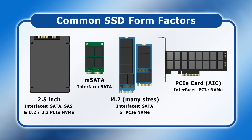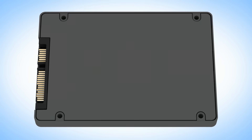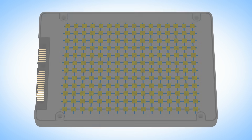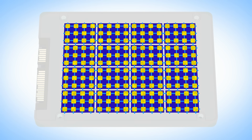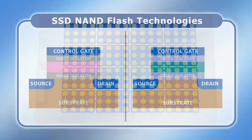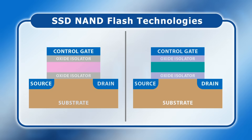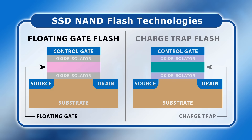SSDs come in a variety of form factors and may feature many different physical connectors and electrical interfaces. However, all SSDs store data on flash memory chips in grids of cells that are grouped into blocks. Specifically, in most SSDs, the memory cells are NAND logic gates. Two technologies are commonly used: floating gate and charge trap flash.